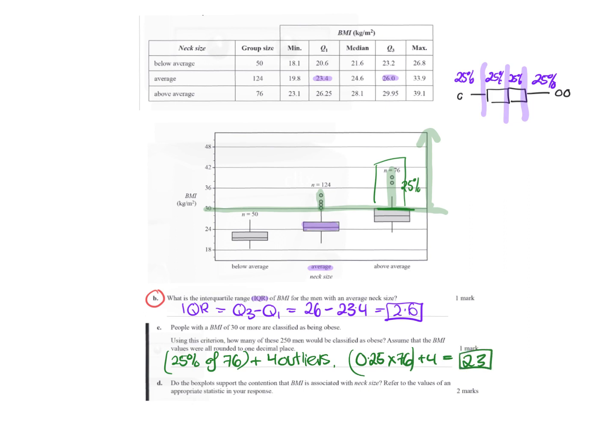And the next question is, does the box plot support the contention that BMI is associated with neck size? Refer to appropriate statistics. Well, that has been put in your notes, but we're going to say yes, it is, because we see the median BMI increases as the neck size increases, and then you would give the stats. You'd probably use the medians from the table to make your life easier. So we'd say with a below average neck with a medium BMI of 21.6, above average neck with a medium of 24.6, and so on.